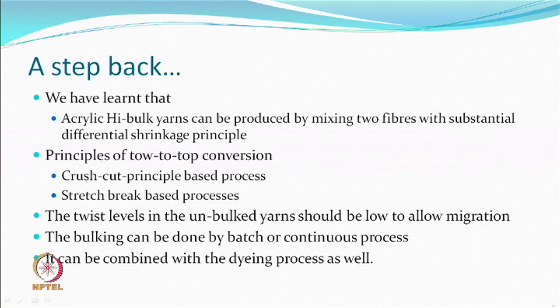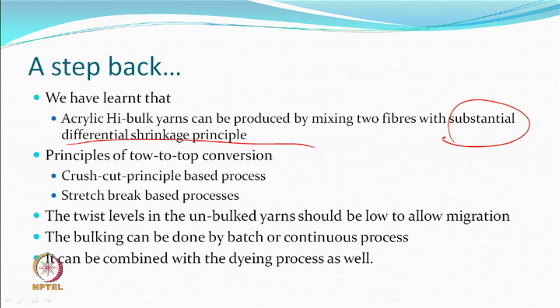High bulk acrylic yarns can be produced by mixing two fibres — shrinkable and non-shrinkable — with a substantial differential shrinkage. The principle is the differential shrinkage principle, but there should be a substantial difference between the shrinkage. We also discussed toe-to-top conversion with two basic principles: crush cut and stretch break.